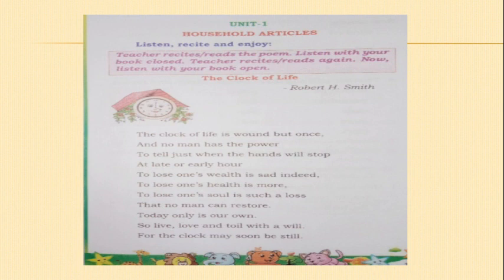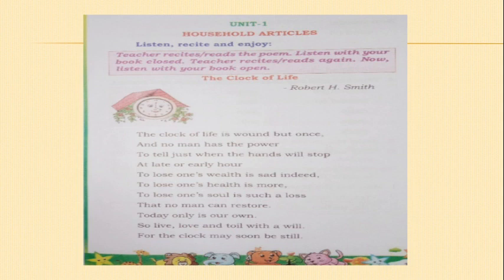Let us now understand the poem. The clock of life is wound but once and no man has the power to tell just when the hands will stop at late or early hour. That means the clock will start working by turning a key once, but no man can see when the hands of the clock stop. In the same way, no person can see when life will stop — no person has the power to know when life ends.